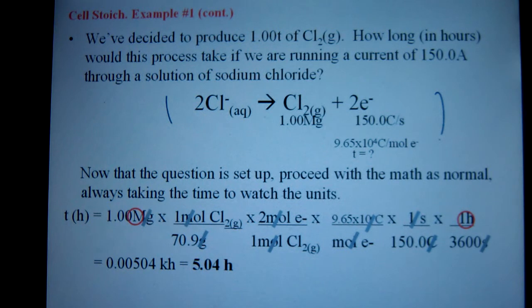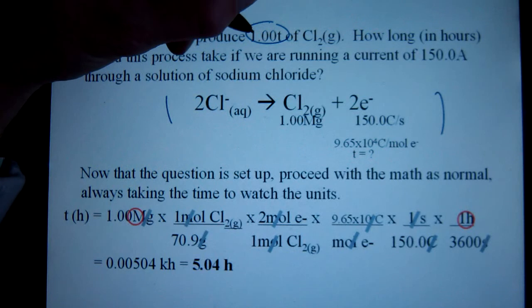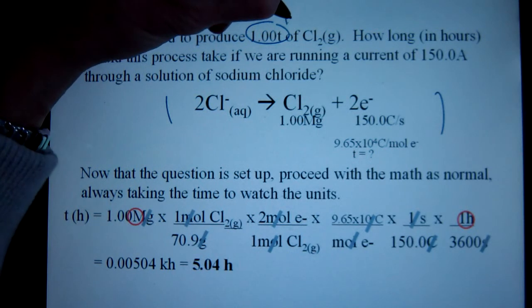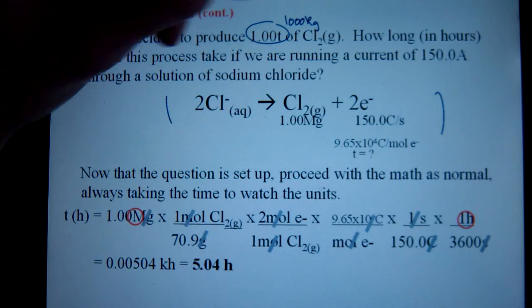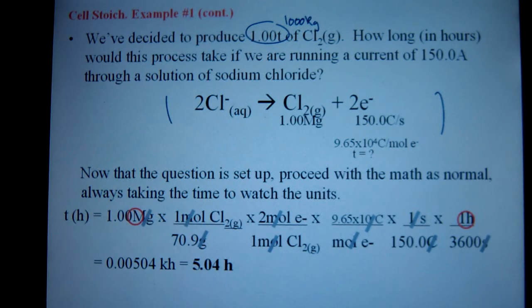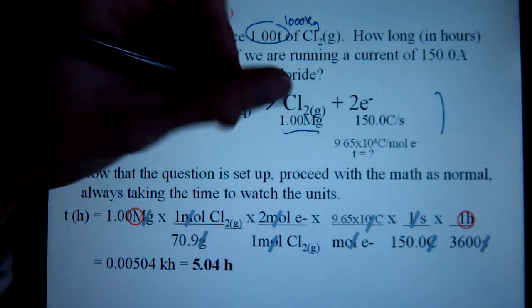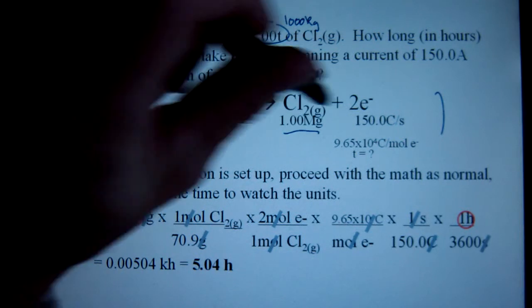Next thing, let's write down the information we know. I was given one ton of chlorine gas, but that's not very handy. So I converted that into one megagram. You could have also converted it into 1,000 kilograms or a million grams, whatever you like. I just use megagrams because it's a little more convenient as far as neatness goes and significant digits.